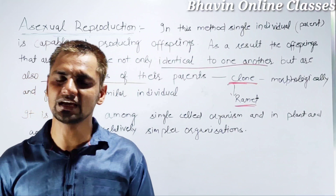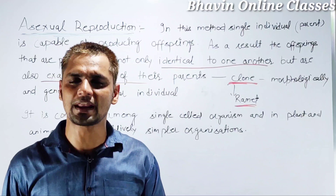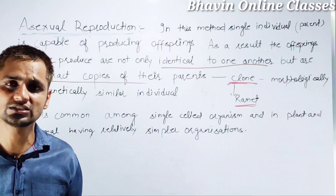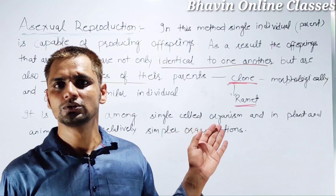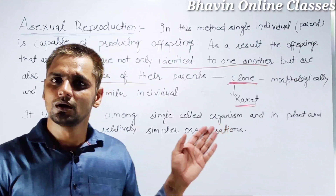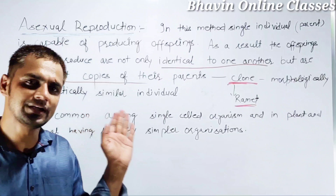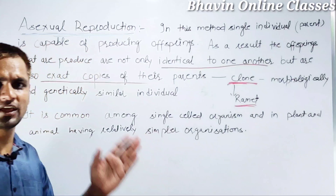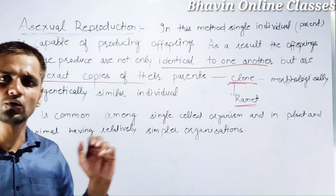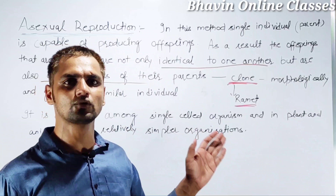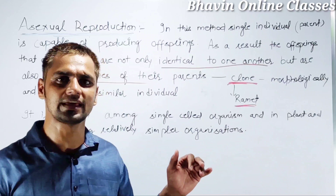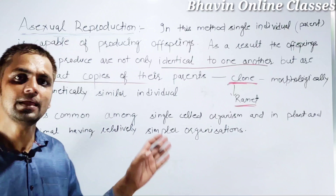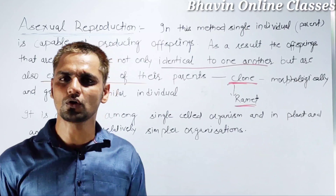In asexual reproduction, a single individual or parent is capable of producing offspring. As a result, offspring are produced not only identical to one another but also as the exact replica of their parents. In this way, the offspring are called clones, which are exact replicas of their parents.